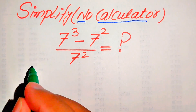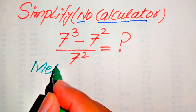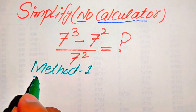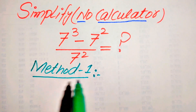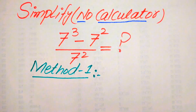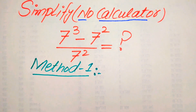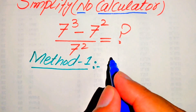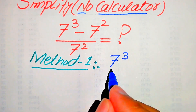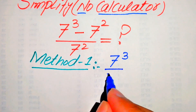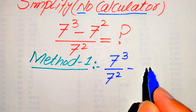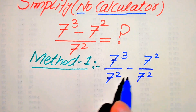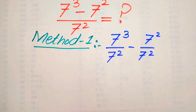I hope you like both of these methods, but if you have any other method in mind, please don't hesitate to write it into the comment section. Now we move towards our first method. In the first method, we break this fraction and it will be written as 7 cubed divided by 7 squared, minus 7 squared divided by 7 squared.